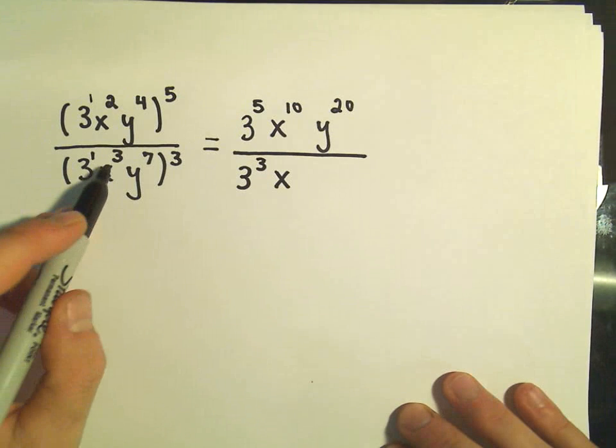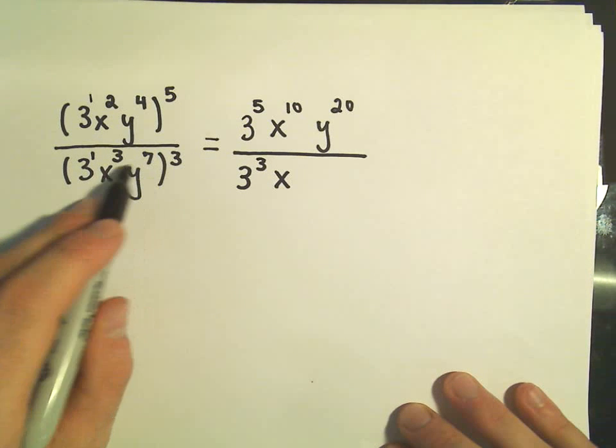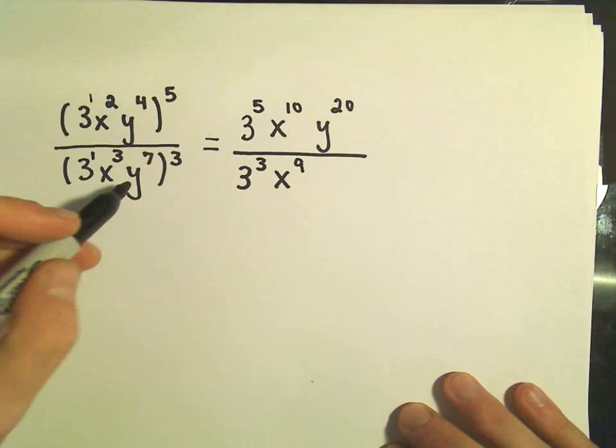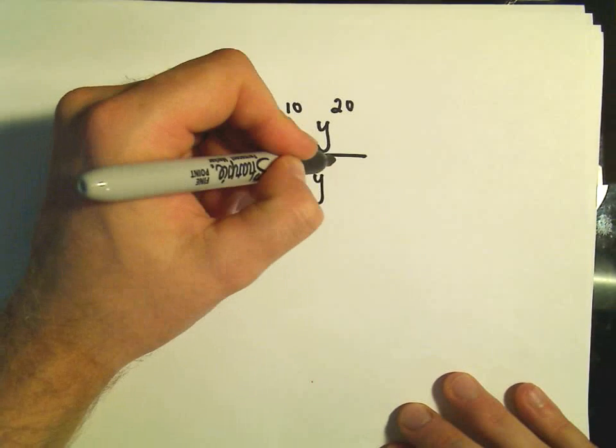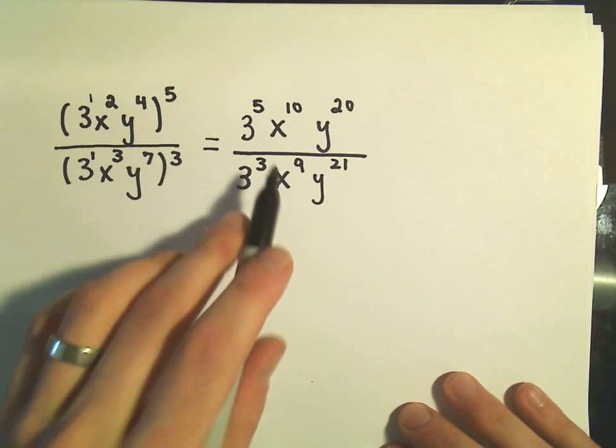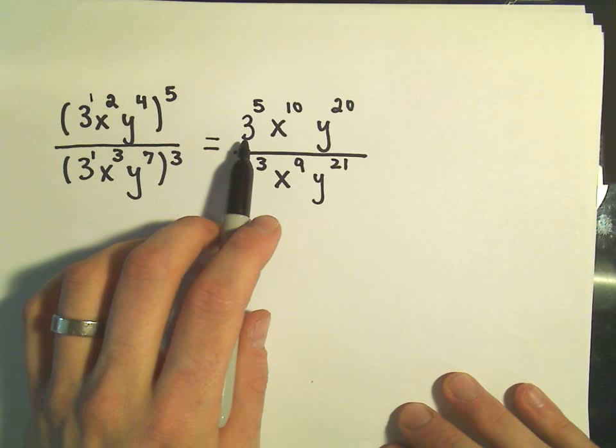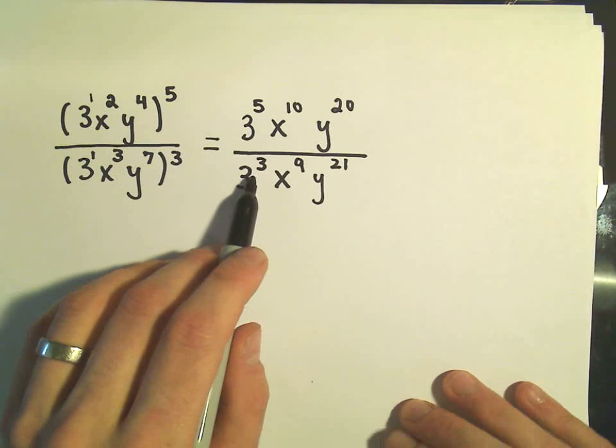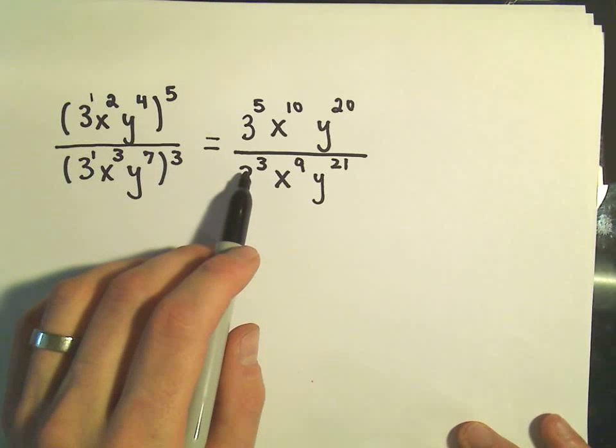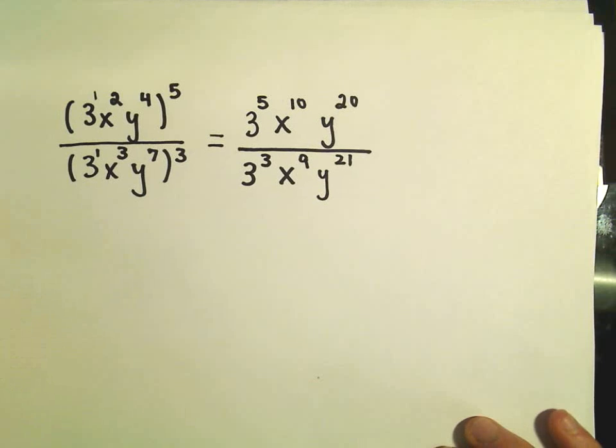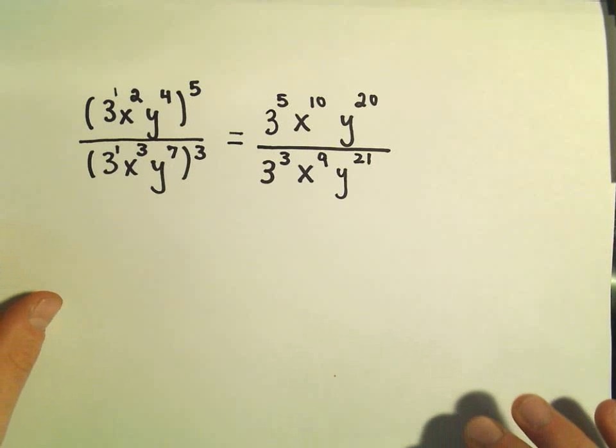We have our x cubed being cubed. So again, we multiply 3 and 3 will give us to the ninth power. And then we have y to the twenty-first power. Some people will start multiplying out 3 times 3 times 3. They'll do it five times and get a big number. And then they'll take 3 cubed and get, I guess it's 27.